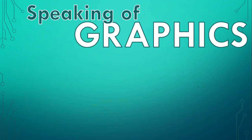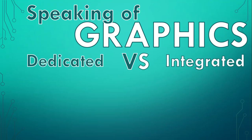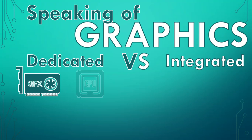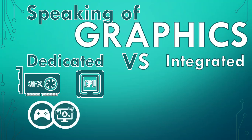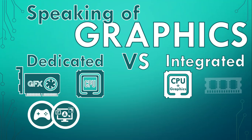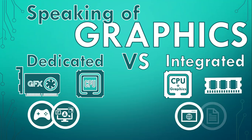When buying a computer, you may hear the terms dedicated graphics versus integrated graphics. Dedicated graphics refer to a separate GPU that is more powerful and specialized for graphics tasks — perfect for demanding tasks like gaming and video editing. Integrated graphics are built into the CPU itself and share memory; they are more basic and suitable for everyday tasks like web browsing and office applications.